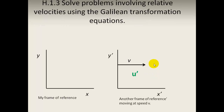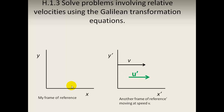We can solve problems involving relative velocities using the Galilean transformation equations. What happens if we have a body which is moving at a speed u prime in another frame of reference? How do I measure the velocity u of that object, given that the frame of reference is already moving away from me at a velocity V? We know that Y equals Y prime, Z equals Z prime, T equals T prime.